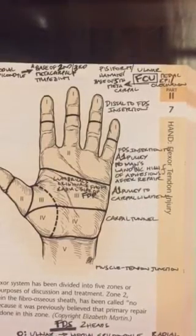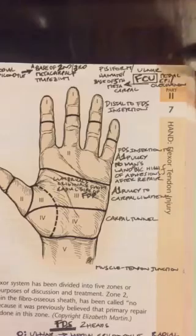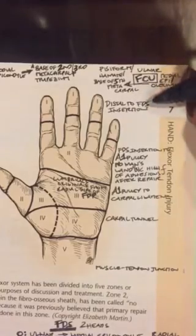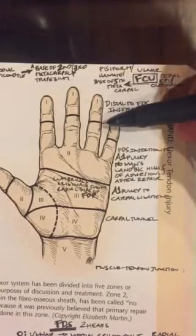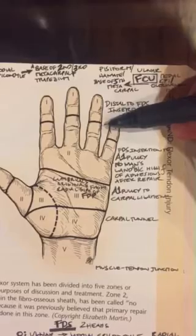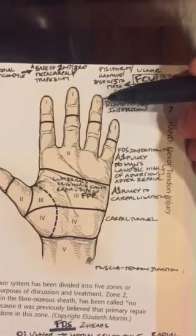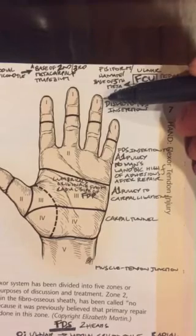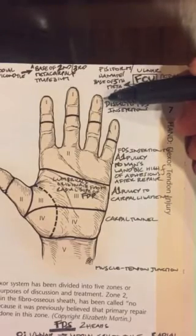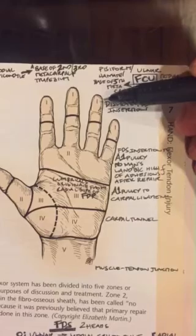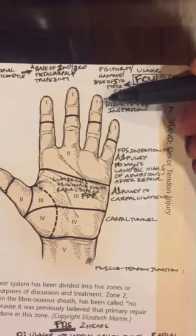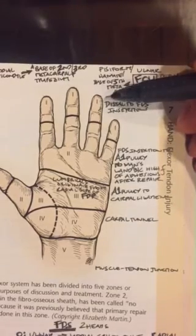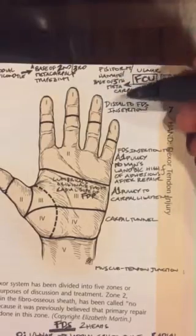Distal to the flexor digitorum superficialis insertion, which is right here at the middle aspect of the middle phalanx, this is determined as zone one. So basically the only tendon that you could potentially injure if you injure zone one of the hand on the flexor side or the palmar side, by definition again, this has to be an injury to only the flexor digitorum profundus.